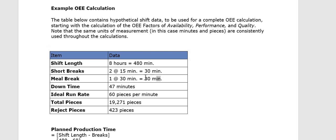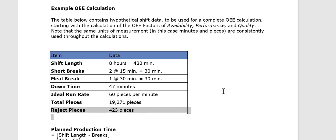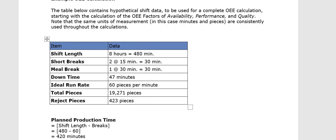The total downtime is 47 minutes — this includes the short (tea) breaks and the meal (lunch or dinner) break, totaling 60 minutes, plus 47 minutes of unplanned downtime. The Ideal Run Rate is 60 pieces per minute. Total pieces produced in the 8-hour shift is 19,271, and reject pieces is 423.